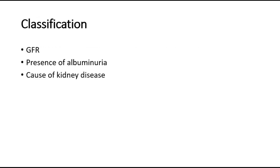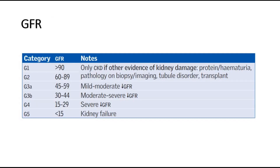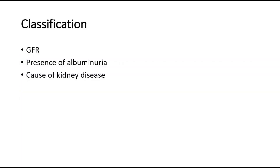There are three ways to classify chronic kidney disease. We can classify it using the glomerular filtration rate (GFR), the presence of albuminuria where there is albumin in the urine, and the cause of kidney disease, which can be further divided into primary renal disease and systemic disease.